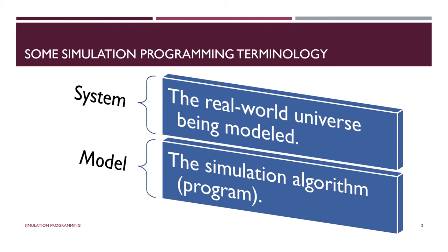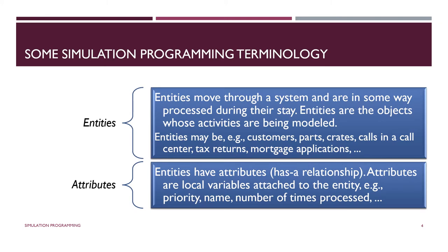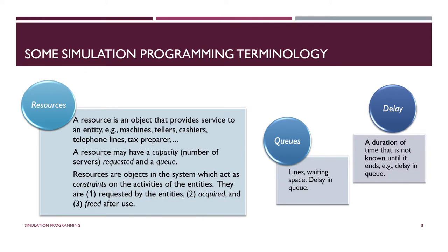Our simulation is composed of entities and attributes. Entities move through the system — they can be customers, parts, calls, tax returns, or mortgage applications. Entities are the objects whose activities are being modeled. Entities have attributes: an entity can be colored red or blue, it can have a name, or a time of arrival — these are all attributes.